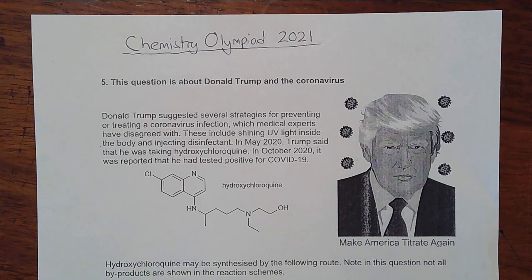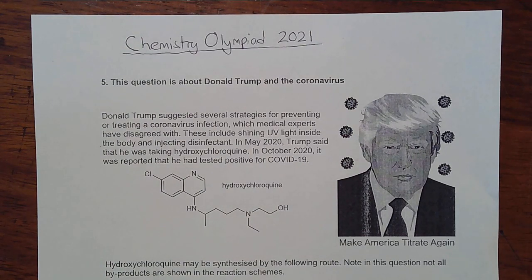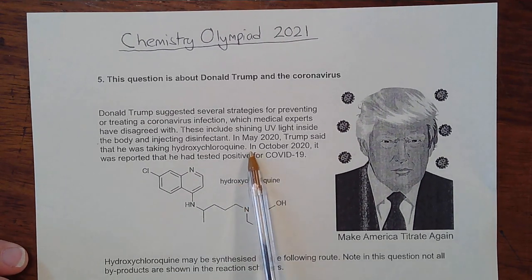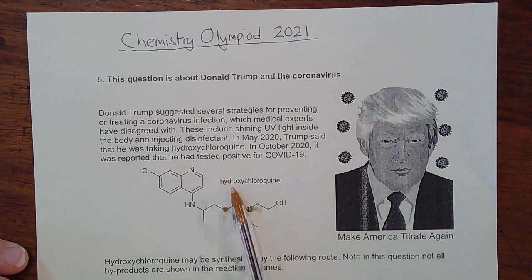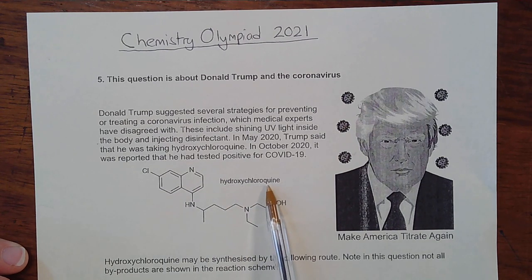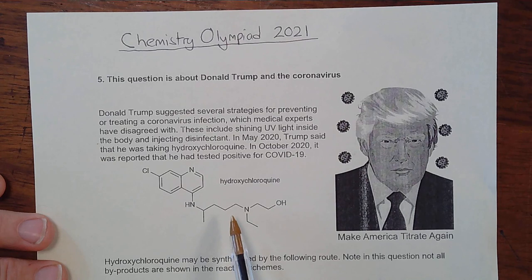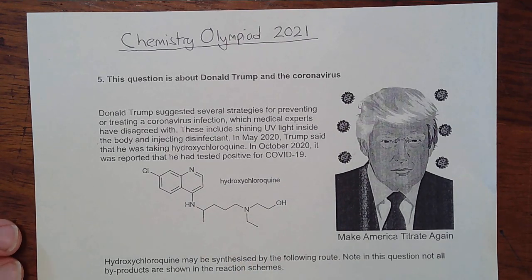This video looks at question 5 on the Chemistry Olympiad of 2021. It's an organic question worth 21 marks, with the total for the paper being 85. So this was a significant and important question. The compound hydroxychloroquine has a skeletal structure shown, and the question is about its formation as a series of experiments. It's important to keep this structure in mind as you work through the question.